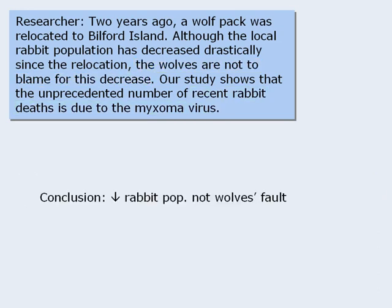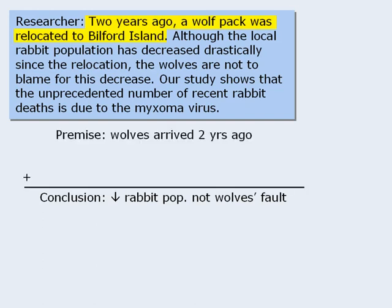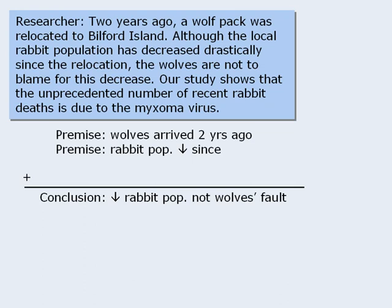Now let's summarize the premises. First, we can take the part about the wolf relocation and summarize it as follows. Next, we can summarize the information about the rabbit population decrease. And finally, the last part about the Maxoma virus can be summarized as follows. This is the basic structure of the argument.